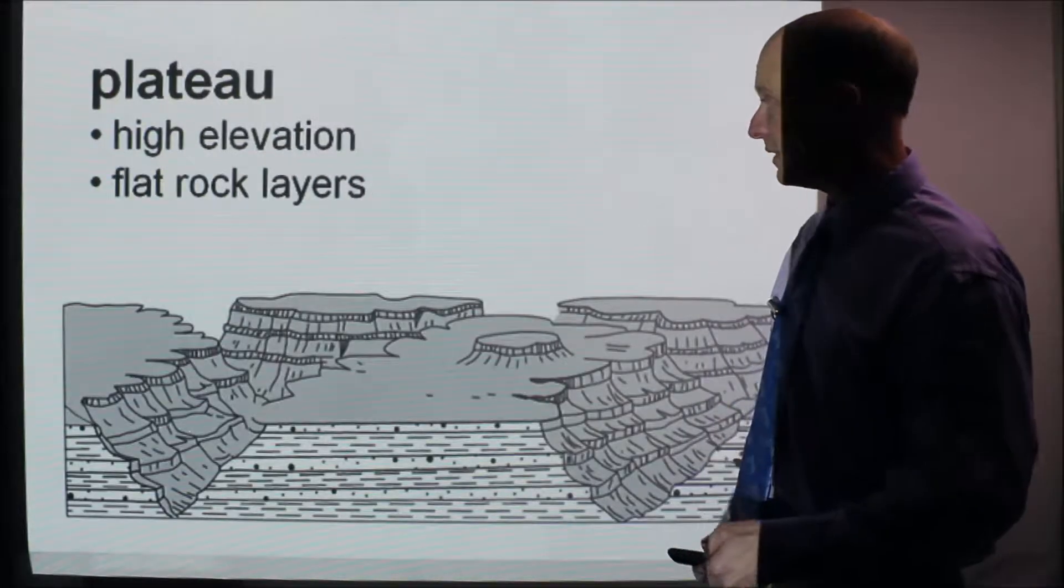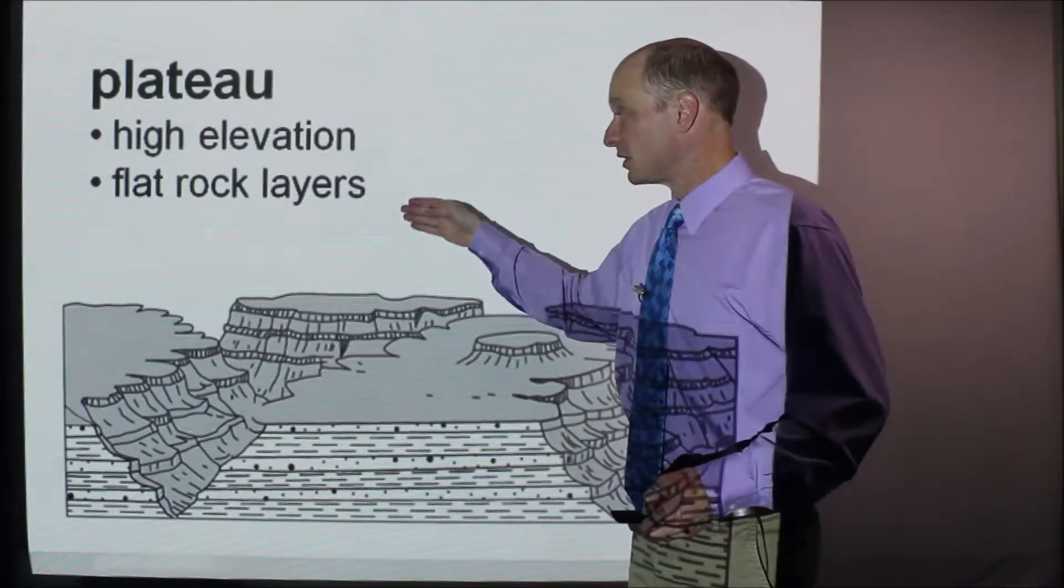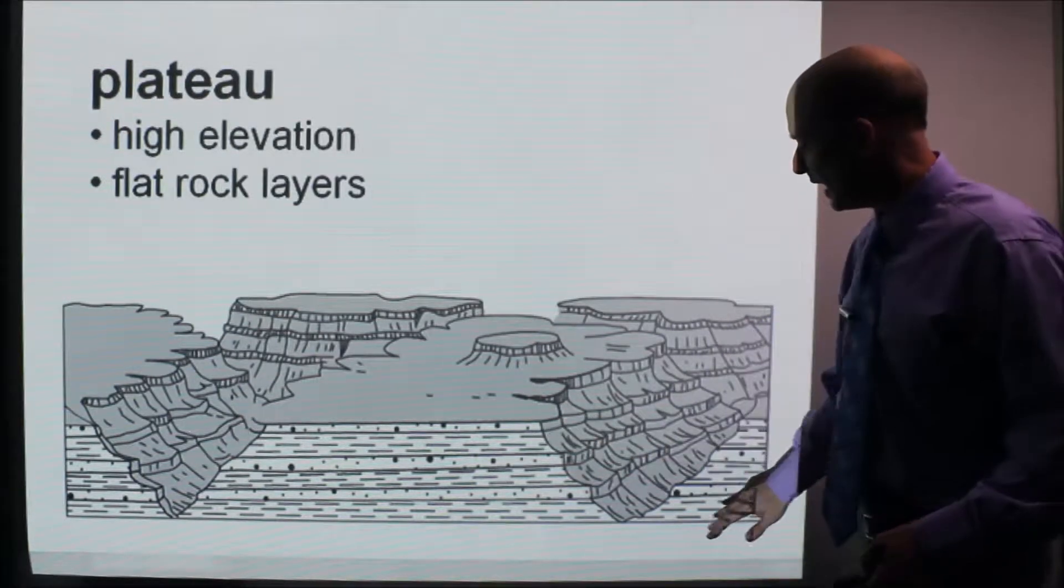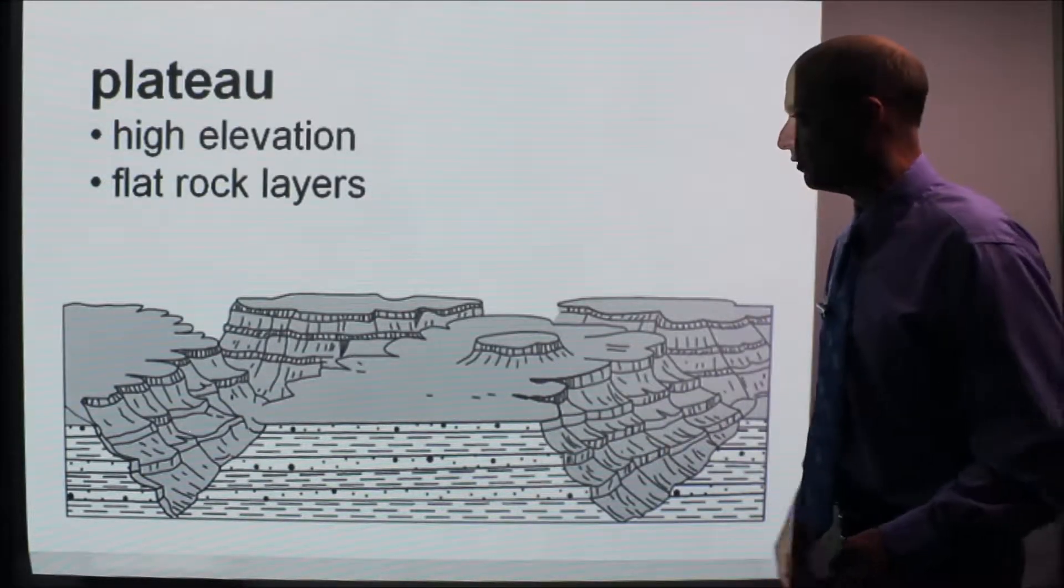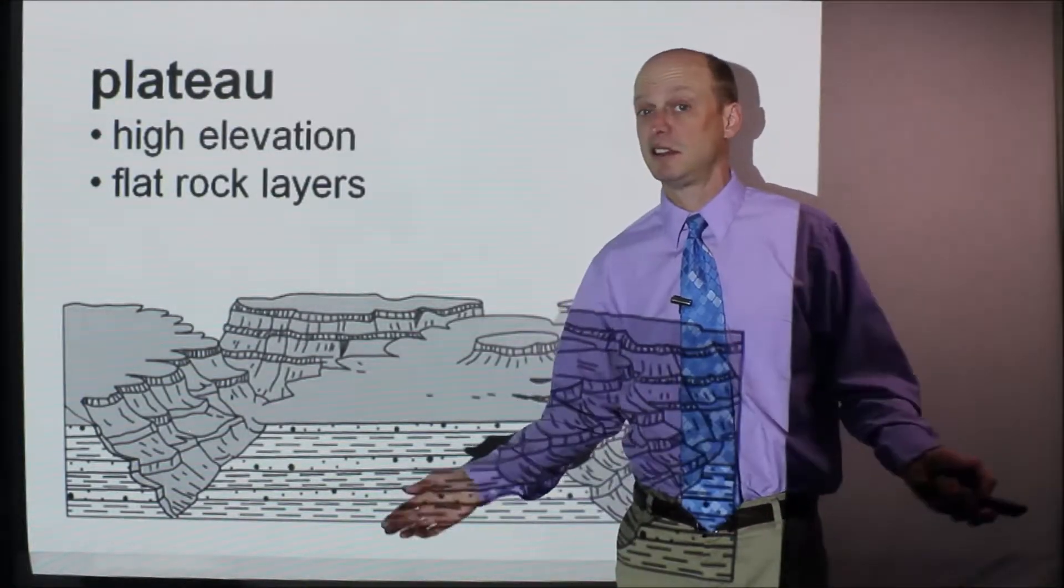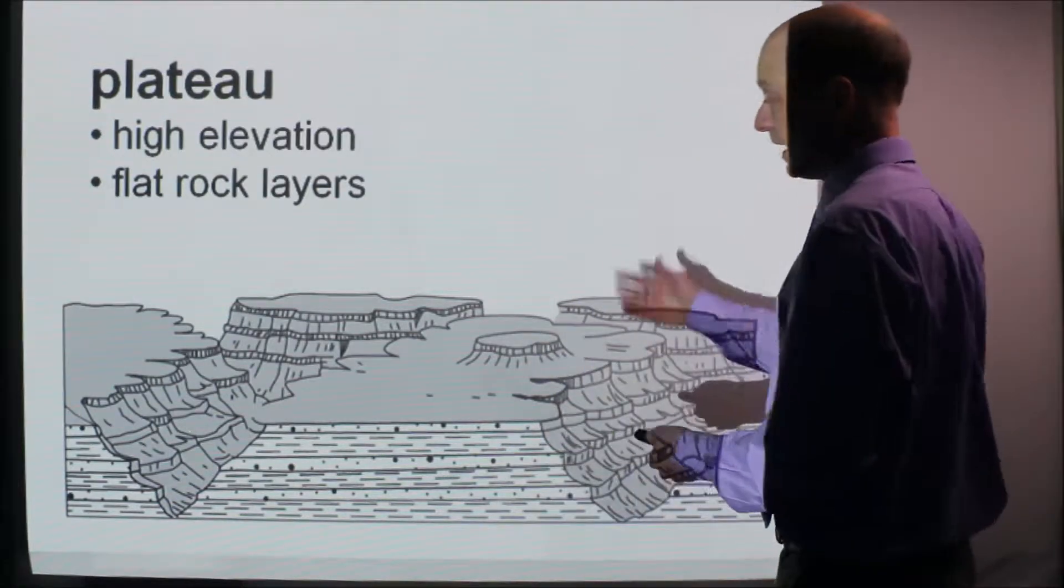So look at the rock layers here. A plateau is up next. It is high elevation, but the layers are really flat. So you can see them here. The layers are really flat, and this valley is caused by erosion of a river. And lowlands are just basically lowlands. A lot of erosion probably occurred there and they're just lowlands.